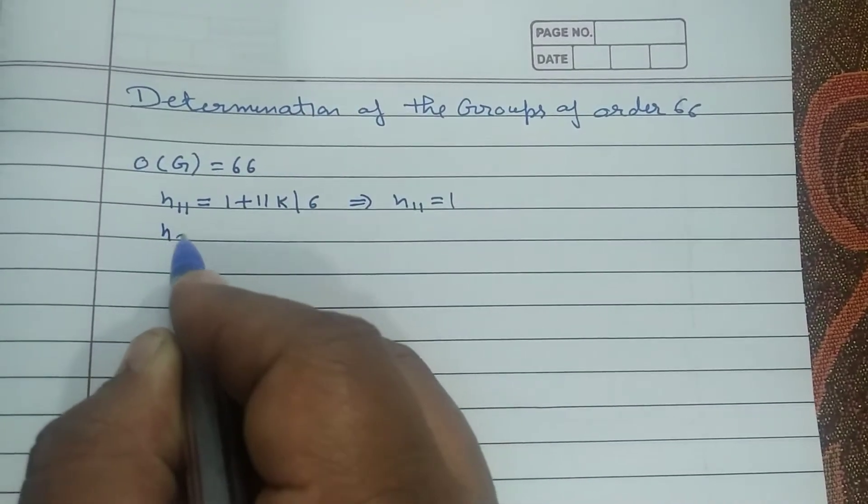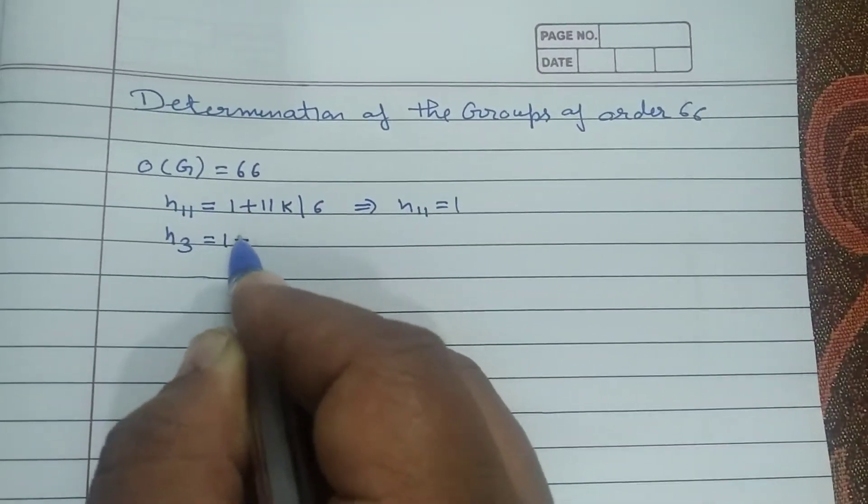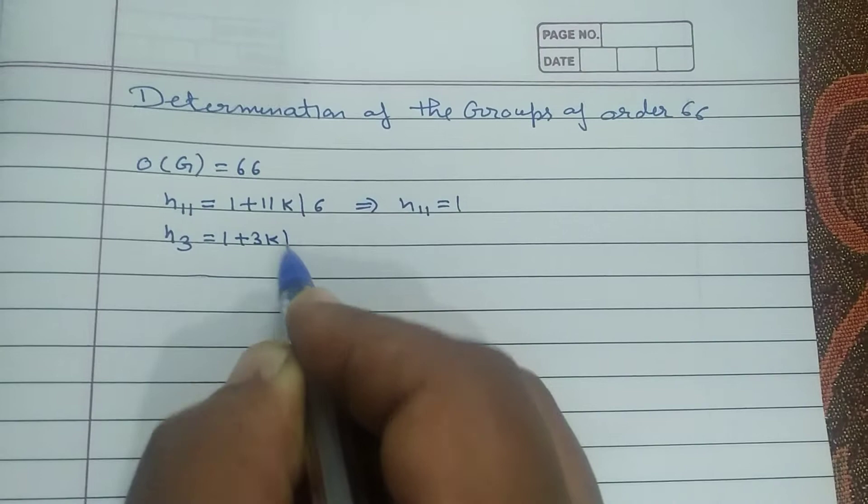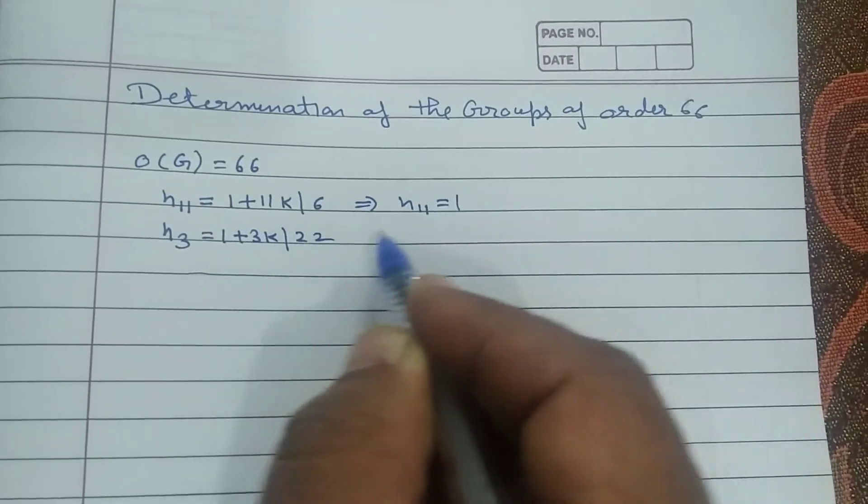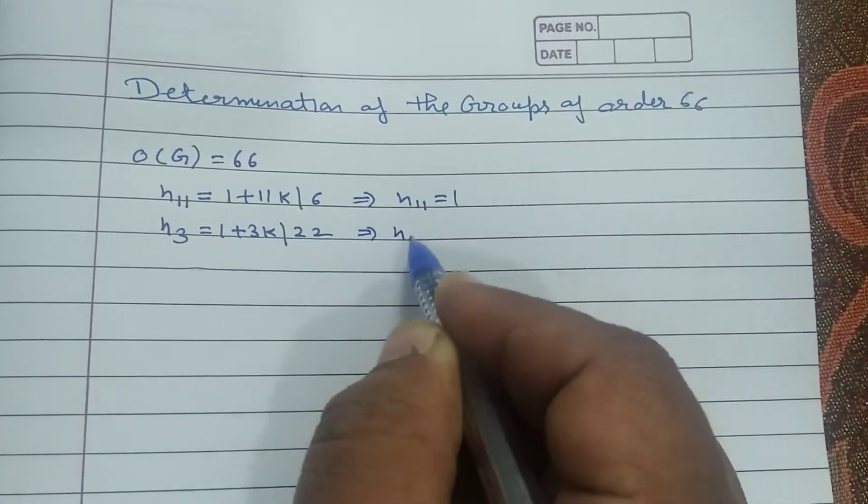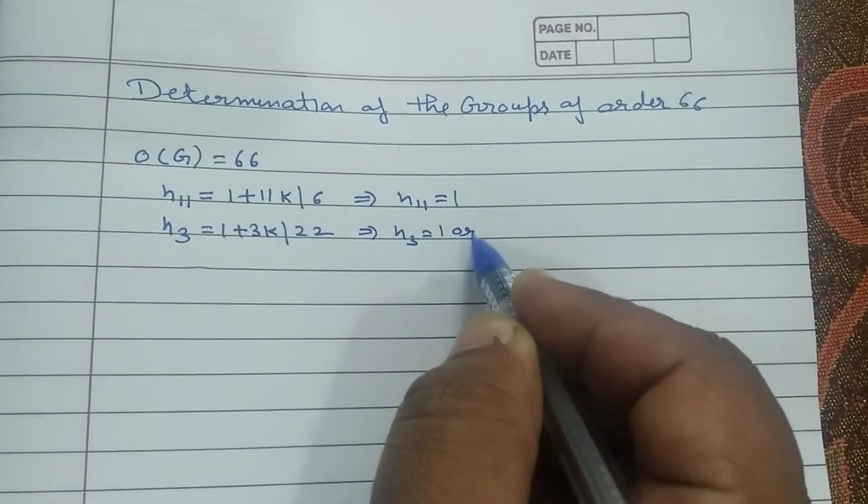Second thing we find n₃: 1 plus 3k divided by 22. Only possibilities are n₃ is 1 or 22.